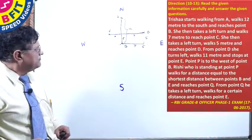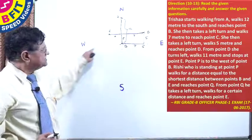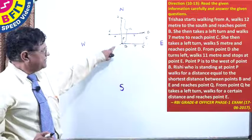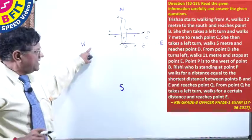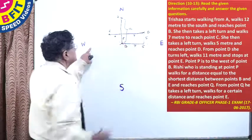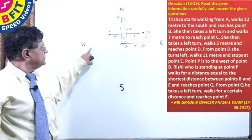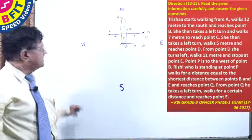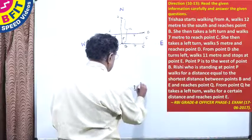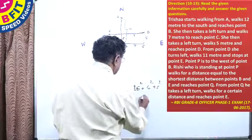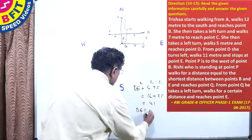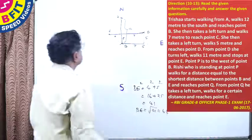Point P is to the west of point B — its exact distance is not given, we only know it lies on that line. Rishi, who is standing at P, walks a distance equal to the shortest distance between B and E. That shortest distance is the hypotenuse of a right triangle with sides 4 meters and 5 meters. BE² = 4² + 5² = 16 + 25 = 41, so BE = √41 ≈ 6.4 meters.